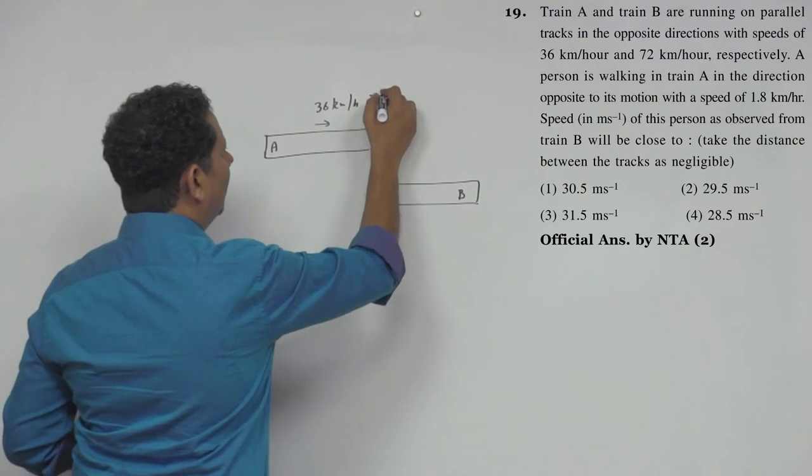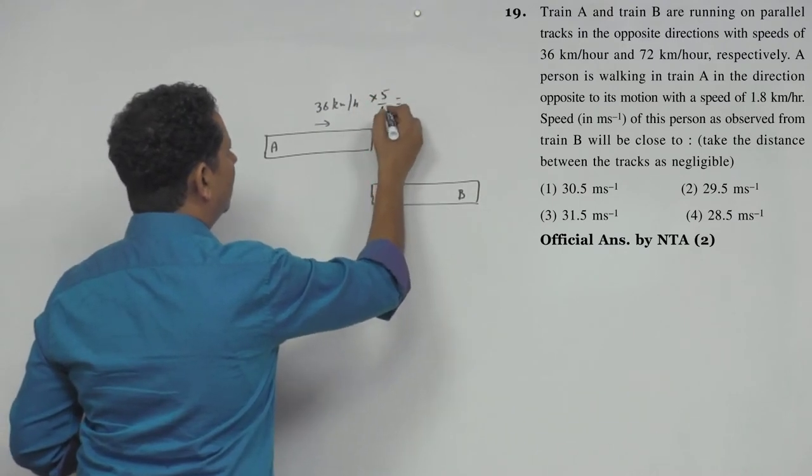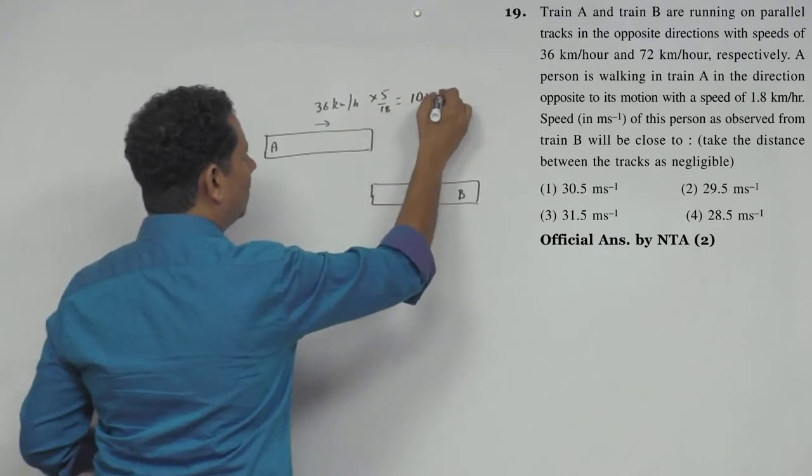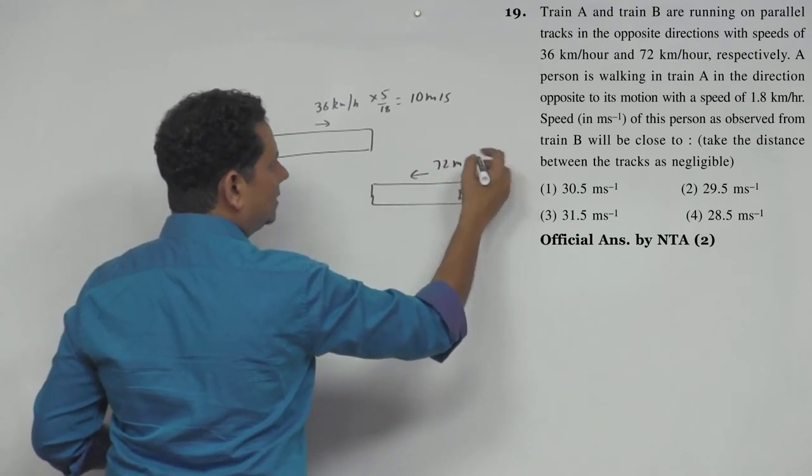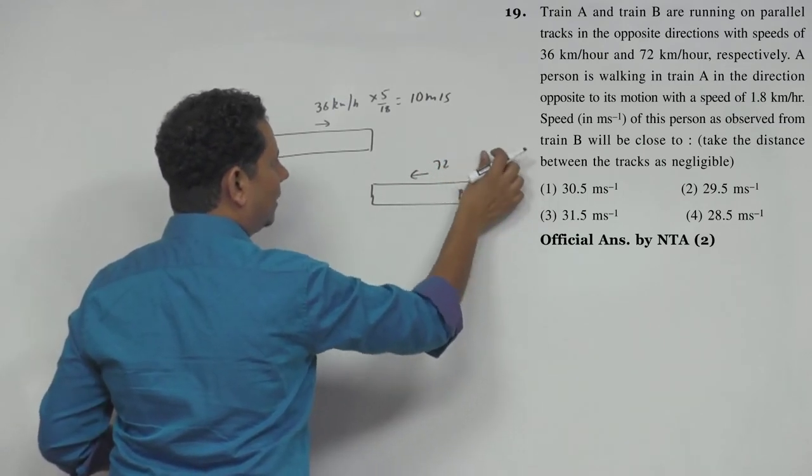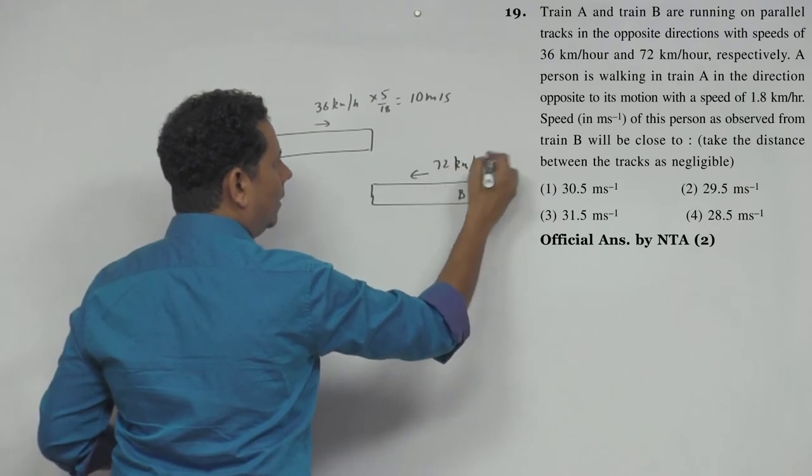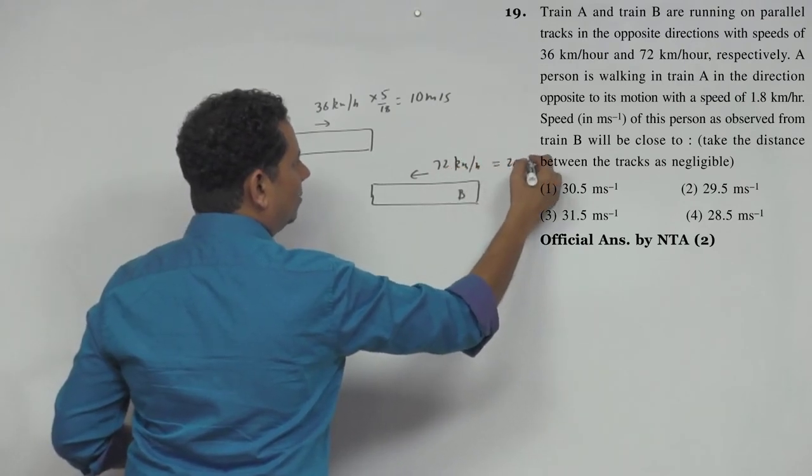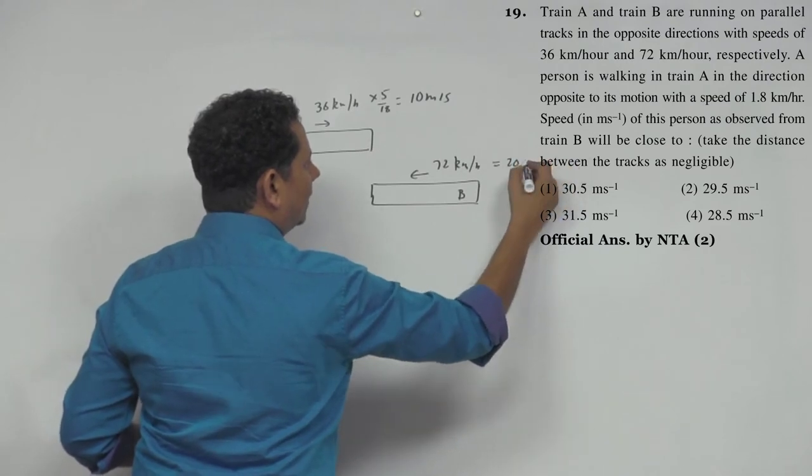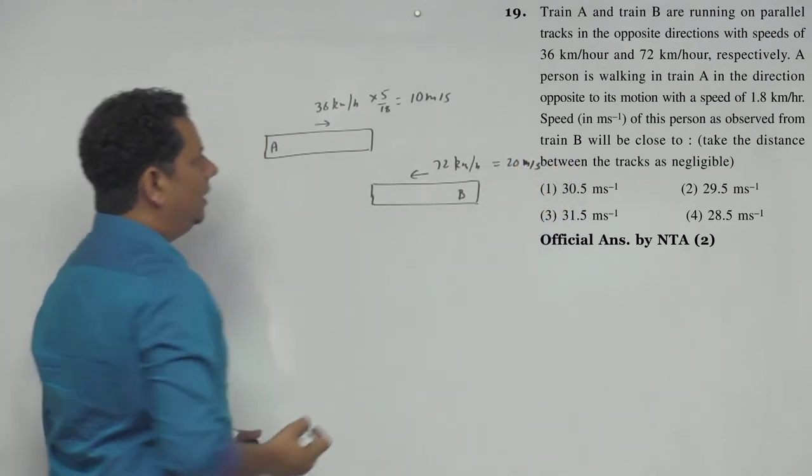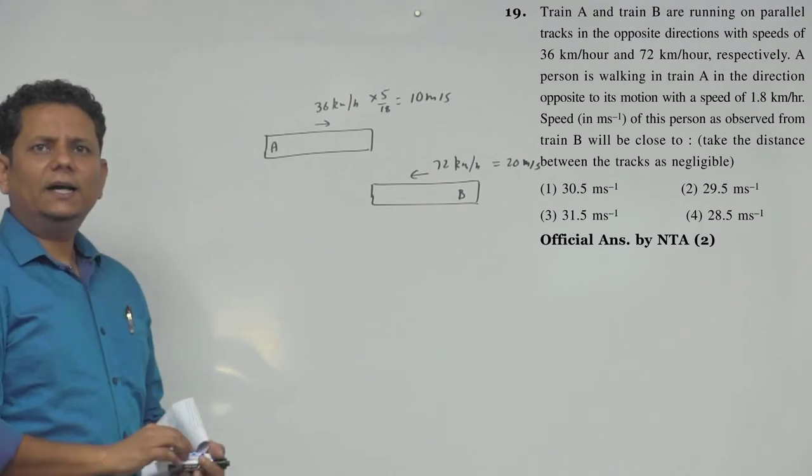Multiply by 5/18, so this is 10 meter per second. Your train B is running at 72 km per hour, so 20 meter per second.